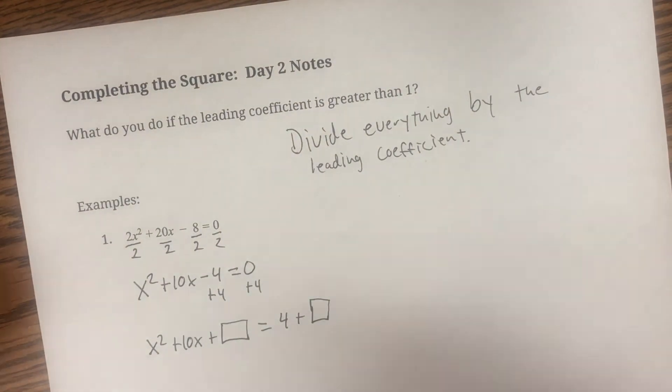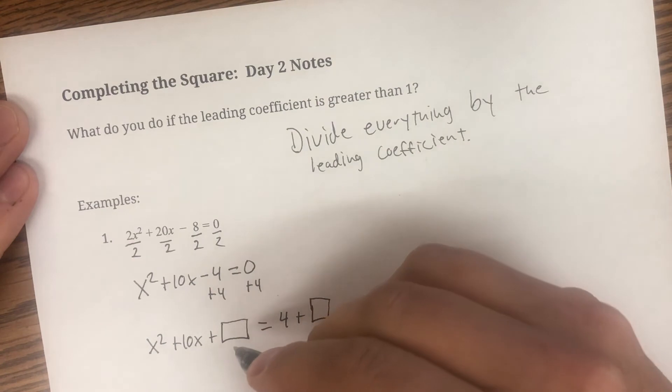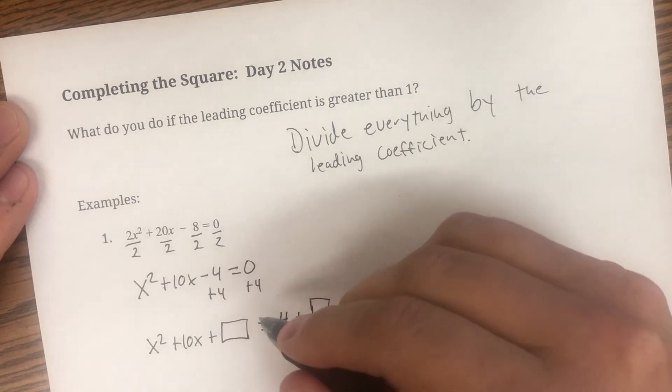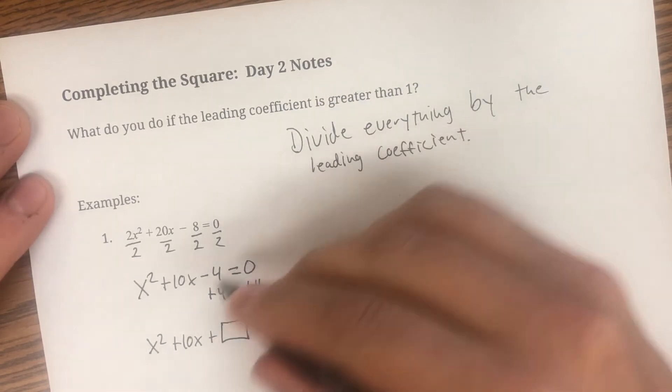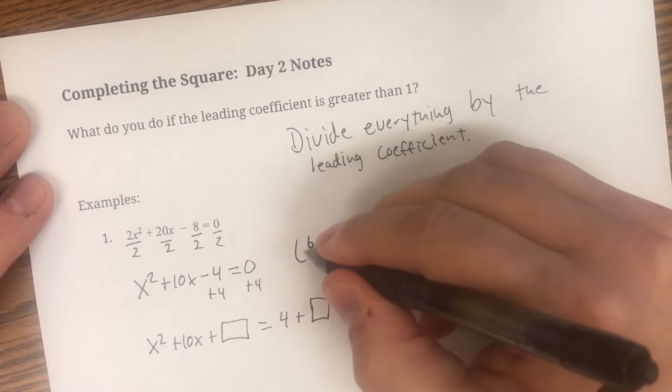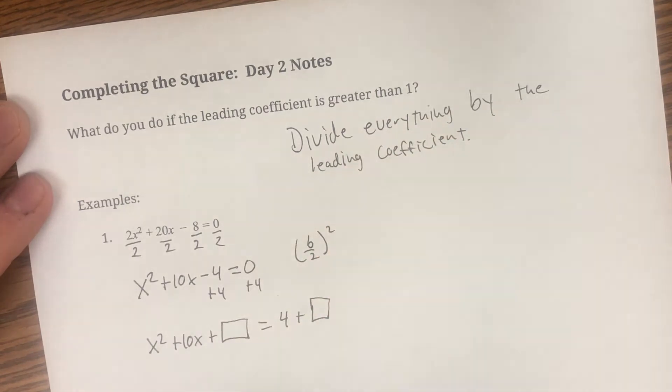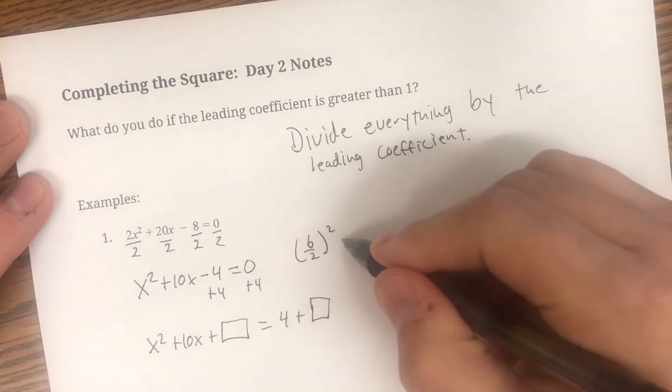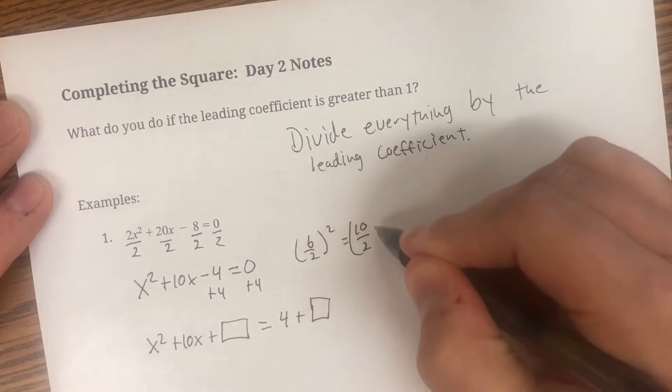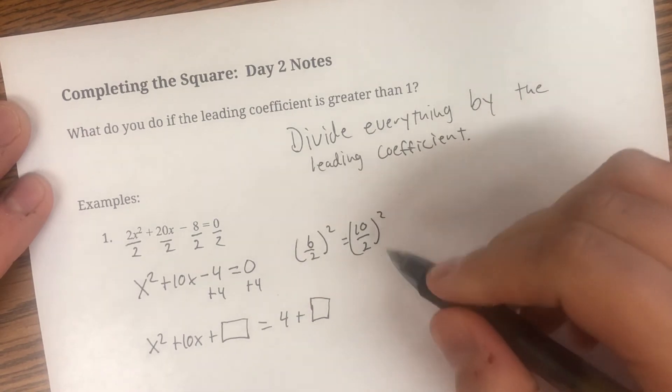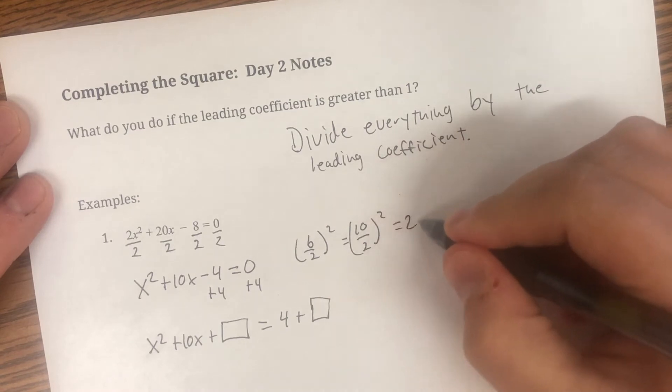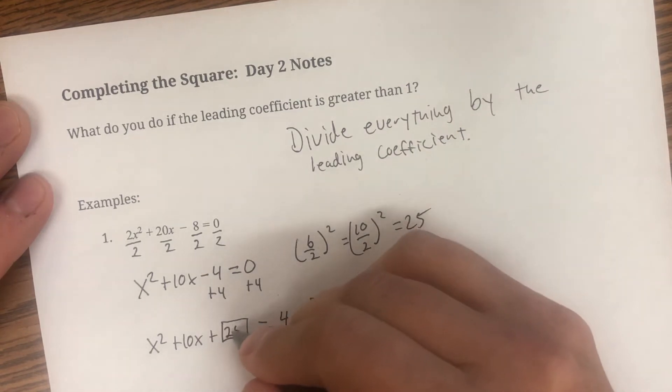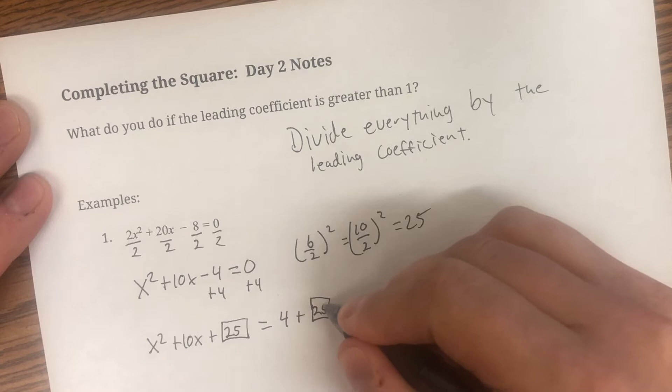So what goes in the box? What goes in the box, we have to take b over two and square it. So b is 10. That's equal to 10 over two squared. 10 divided by two is five. Five squared is 25. So 25 is going in both boxes.